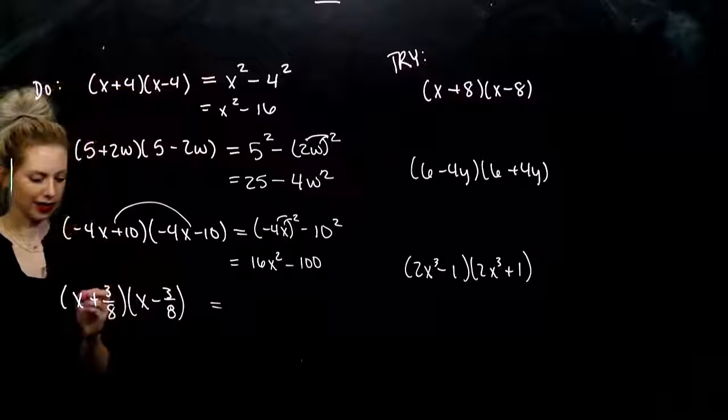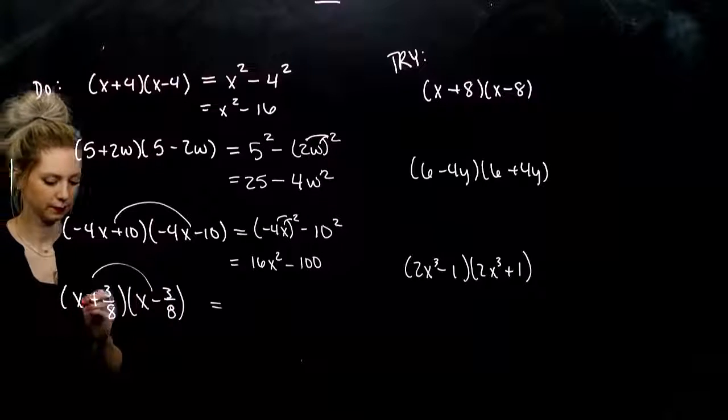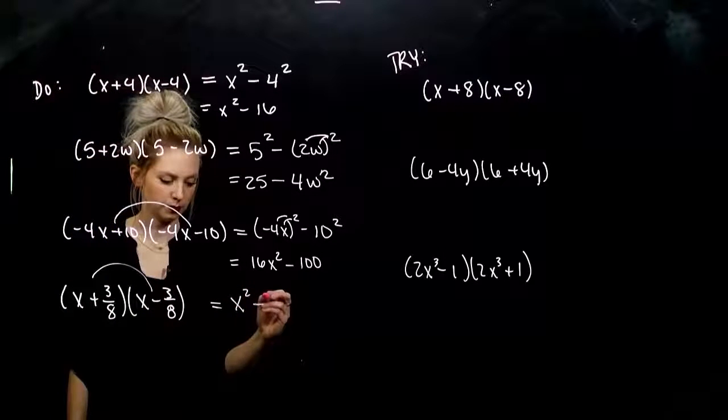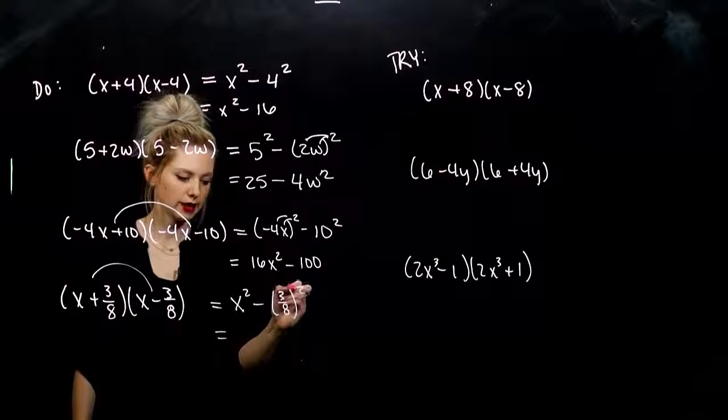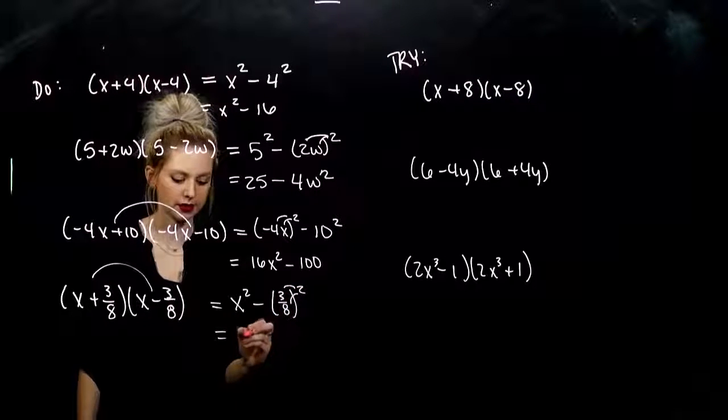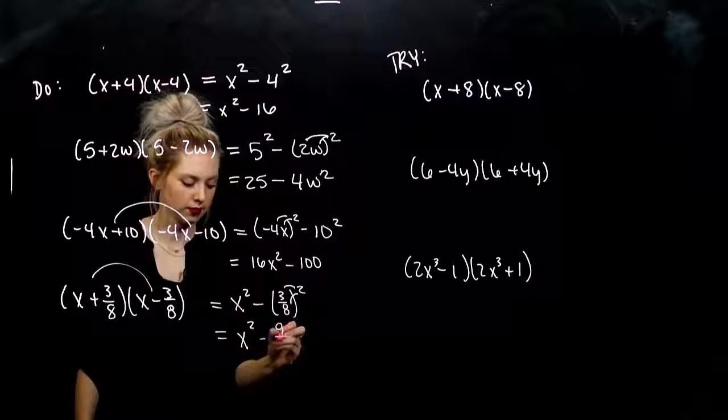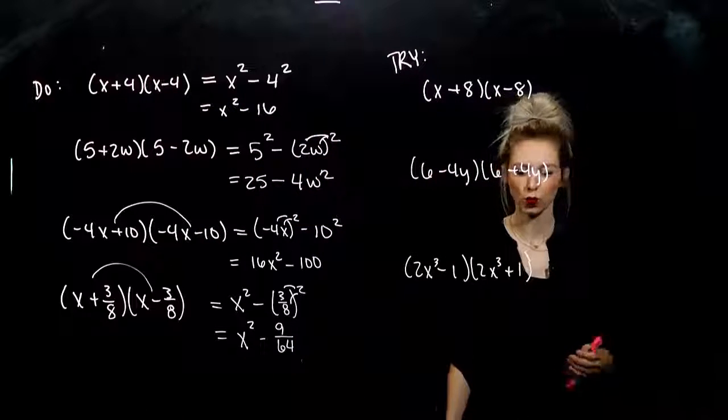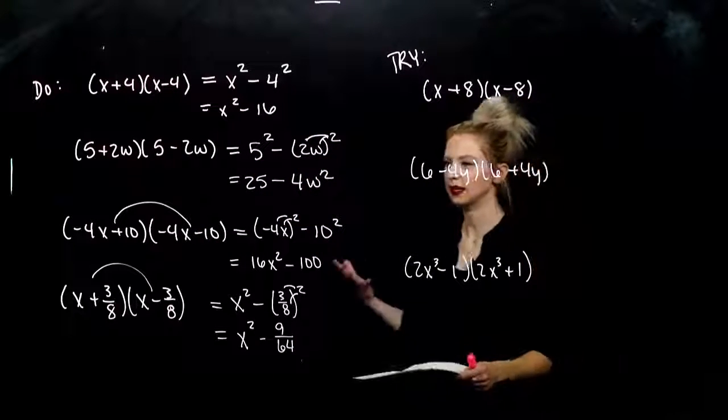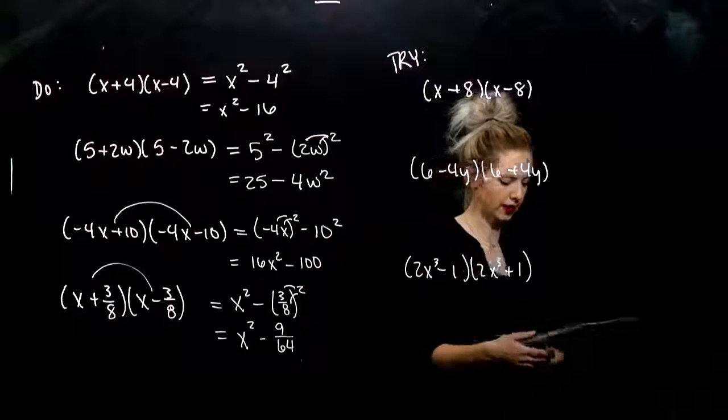And again, very last one. Same, same, different sign. First thing squared, minus the last thing squared. When we square a fraction, what has to happen? Distribute it to the top and to the bottom. So, we're looking at x squared minus 9 over 64. Quicker. Quicker way to get there. Again, if you forget these tricks, foil it out. You'll always get the right answer.